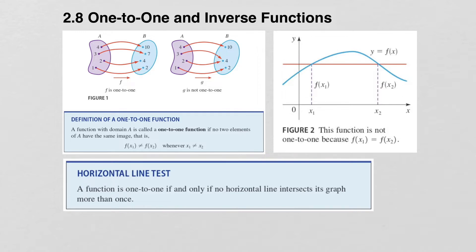So just like the vertical line test, we have a horizontal line test. We say that a function is one-to-one if and only if no horizontal line intersects its graph more than once.